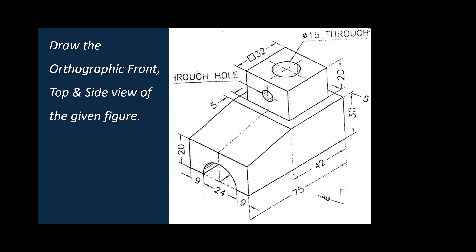Draw the orthographic front, top and side view of the given figure. We have a three-dimensional object shown in isometric projection or isometric view.